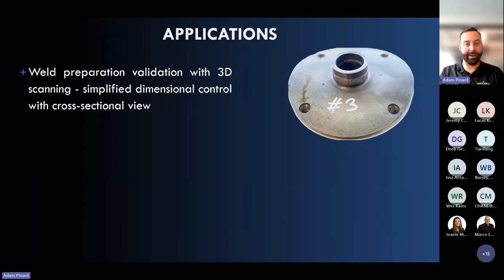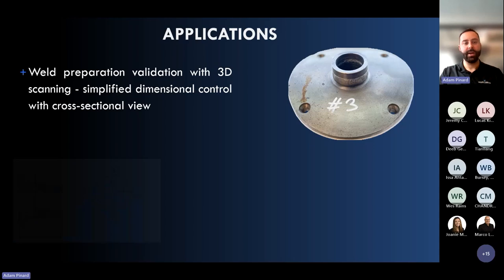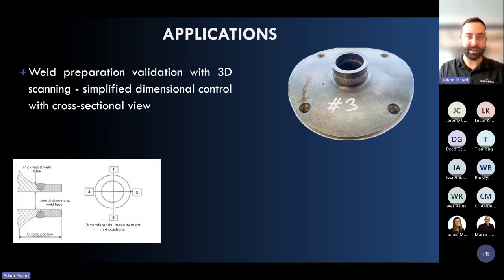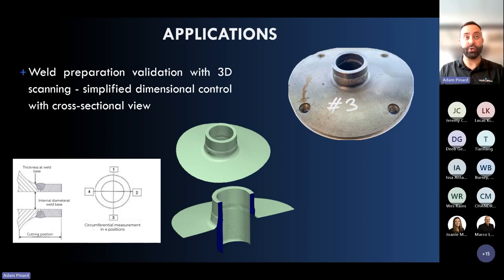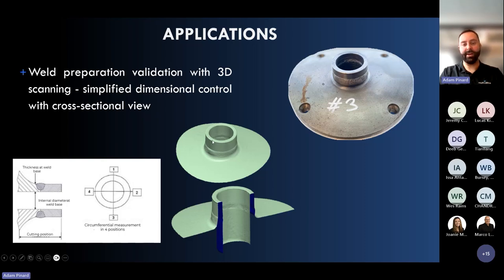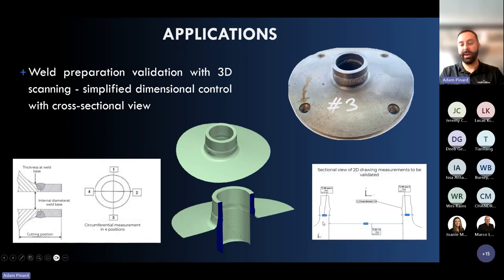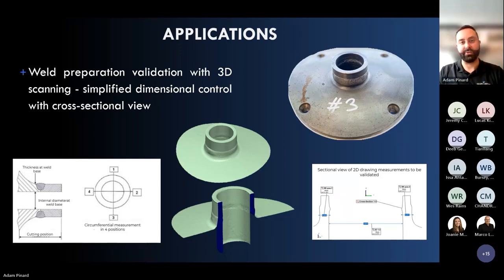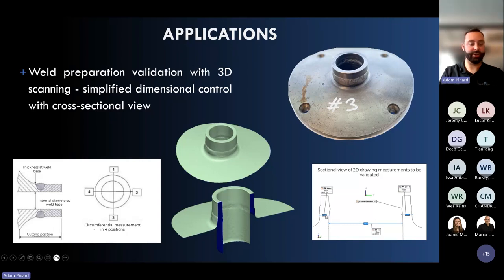For weld preparation, 3D scan can reach deep areas that traditional tools might not or struggle with. Even with a tight opening, 3D scan can reach deep internal areas and extract interesting internal diameter and wall thickness measurements. Our technology and software reproduce traditional tool measurements like a caliper to extract these dimensional characteristics.